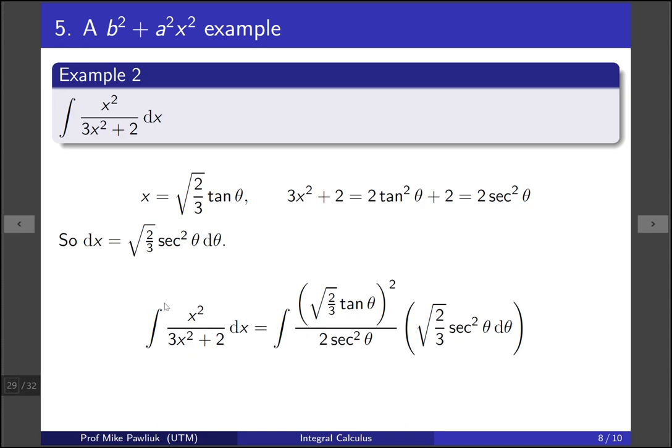So this is the integral that we're starting with. We replace x with what it is, right here. We replace 3x squared plus 2 with 3x squared plus 2 is 2 secant squared, so we replace it here. And then finally the dx is this part right here, which we computed right here. And so we replaced all three components that we had to substitute.